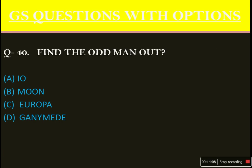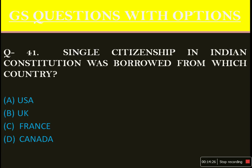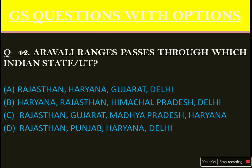Find the odd man out: Io, Moon, Europa, Ganymede. Options A, C, and D are moons of Jupiter, but option B — Moon — is the satellite of Earth. So the answer is option B. Single citizenship in the Indian Constitution was borrowed from which country? Again, the answer is option B: UK. The Aravalli ranges pass through which Indian states? The answer is option A: Rajasthan, Haryana, Gujarat, and Delhi. It does not pass through Himachal Pradesh or Punjab.